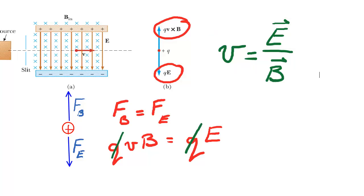The only other thing to remember is how to calculate the electric field between parallel plates. From our electrostatics unit, the electric field formula for parallel plates is just the voltage across the plates — the potential difference — divided by the separation of the plates: E equals V over d. This allows you to calculate the top of that equation, the value of the electric field.